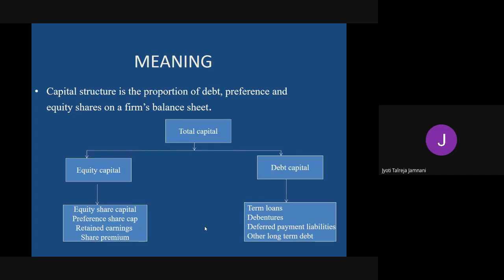These are the four things under equity capital. Next is debt capital. The first component is term loans - long-term loans taken from banks, financial institutions, cooperative societies, or from the general public in the form of bonds called debentures. So the first part is term loans, and the second is debentures, where you issue bonds to the public who give you money for long-term purposes.